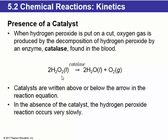When we write a chemical reaction that has a catalyst, we write the name of the catalyst above or below the arrow because it is neither a reactant nor a product. In the absence of a catalyst, hydrogen peroxide decomposes very, very slowly.